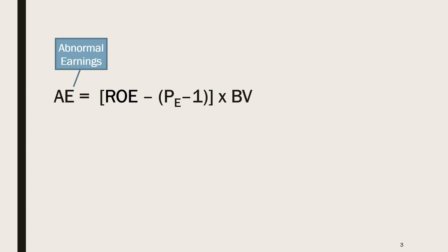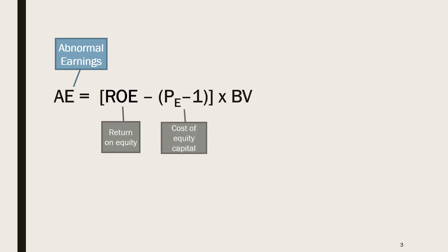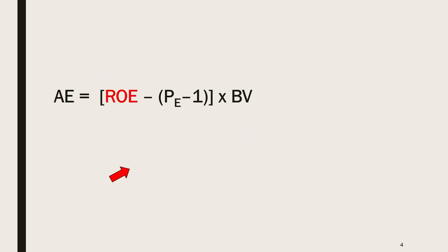Another way of saying this is that abnormal earnings is driven by three things: return on equity, cost of equity capital (roe), and the book value of equity. One of the accounting drivers of abnormal earnings is return on equity.